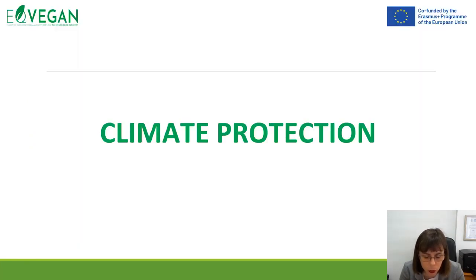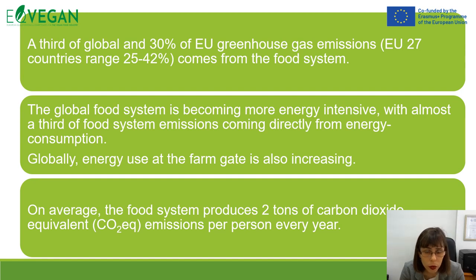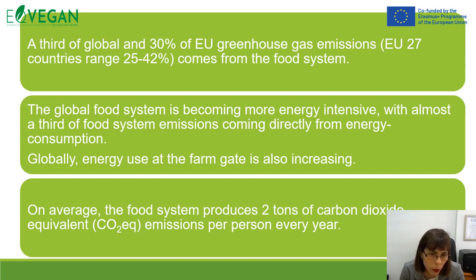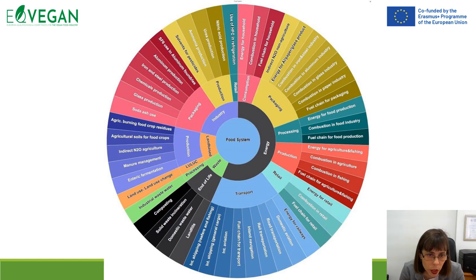We need to think about food production in terms of climate protection. 30% of EU greenhouse gas emissions come from food systems. The global food system is becoming more energy intensive, with almost a third of food system emissions coming directly from energy consumption. Energy use at the farm gate is also increasing globally. On average, the food system produces two tons of CO2 equivalent emissions per person every year.